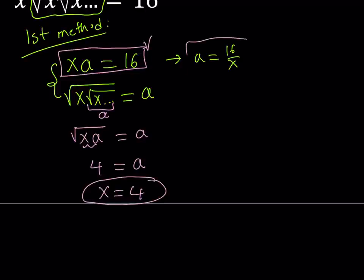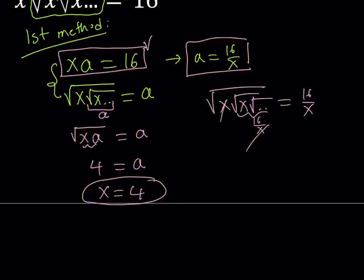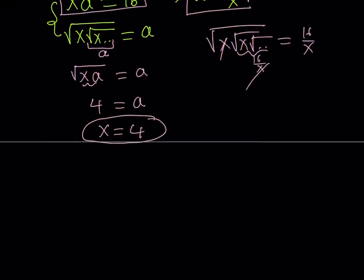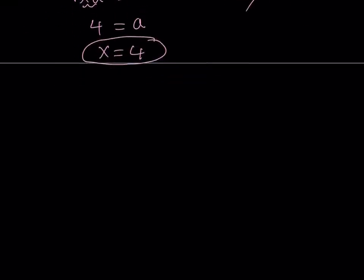You could also use this method. If you did, then you would get something like x times the square root of x times blah blah blah equals 16 over x. And this would also be 16 over x. And then x would cancel out. Square root of 16 is 4, so on and so forth, right? It gives you the same thing, pretty much. Now here's my second method.